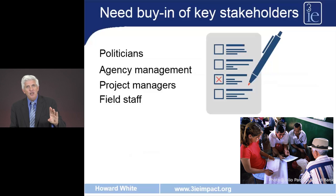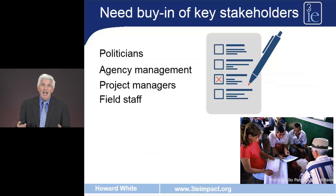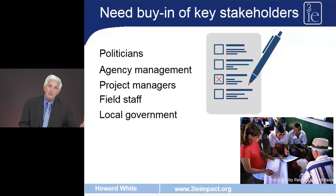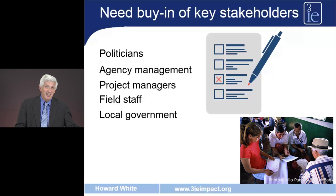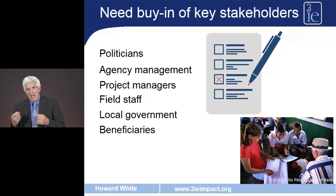For example, in an evaluation of eyeglasses in China, eyeglasses were given to secondary school students to improve their learning outcomes. The doctors carrying out the eye tests, having finished that work in the treatment areas, went to the control schools and gave out glasses there too, thus contaminating the design. They hadn't been properly made to understand why it is important to preserve an untreated control group. Local government officials and community leaders also play a key role in getting community buy-in and acceptance of the programme, and the importance of being a control community. Finally, the beneficiaries themselves need to understand the importance of the programme and the evaluation design.